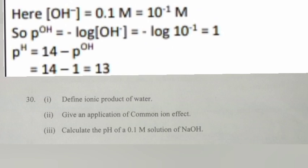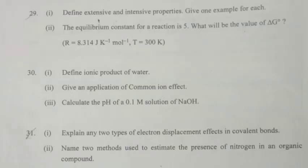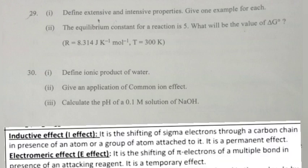Question 31.1: Explain any two types of electron displacement effects in covalent bonds. Answer: Inductive effect (I effect): It is a shifting of sigma electrons through a carbon chain in the presence of an atom or a group of atoms attached to it. It is a permanent effect.